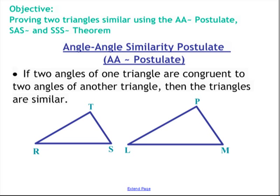The first one is the angle-angle similarity postulate. And that basically, as you see here, says that - let me find my highlighter - it says that if two angles in one triangle are congruent to two angles of another triangle, then the triangles are similar. That's pretty straightforward.